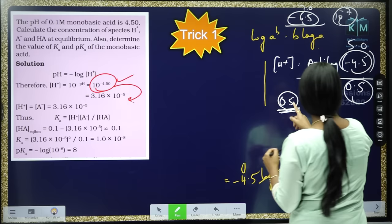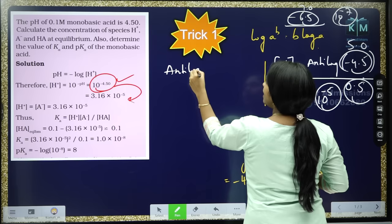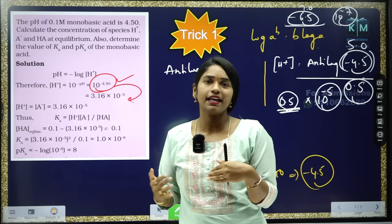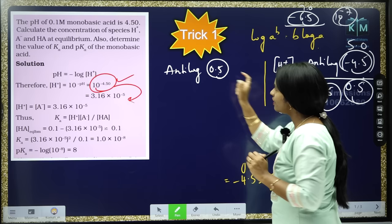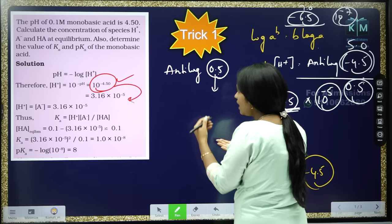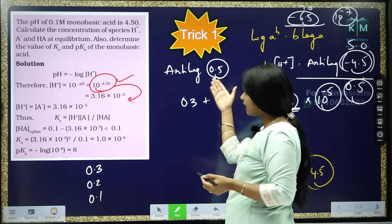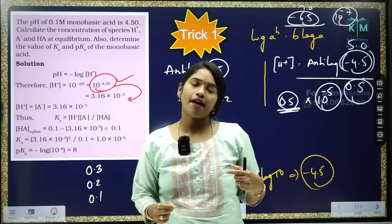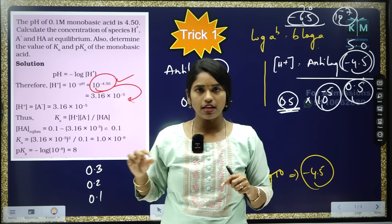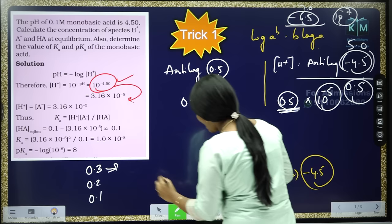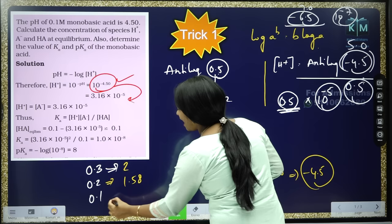How to find the anti-log of 0.5? First time learning this may take a little time, but once you learn it you will feel very confident. Split 0.5 as 0.3 plus 0.2. Any number, you always split this way for calculating anti-log — using 0.3, 0.2, 0.1. Anti-log of 0.3 is 2, anti-log of 0.2 is 1.58, and anti-log of 0.1 is 1.26. I have already made an anti-log video; I will give that link in the description.